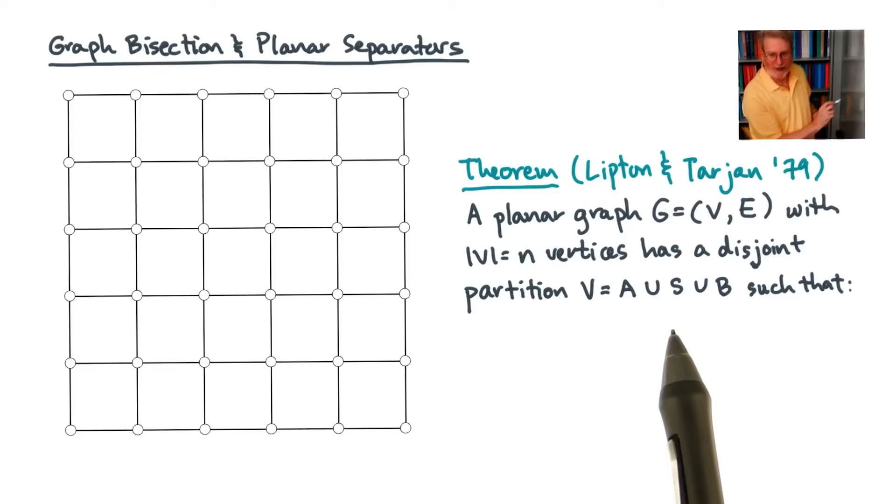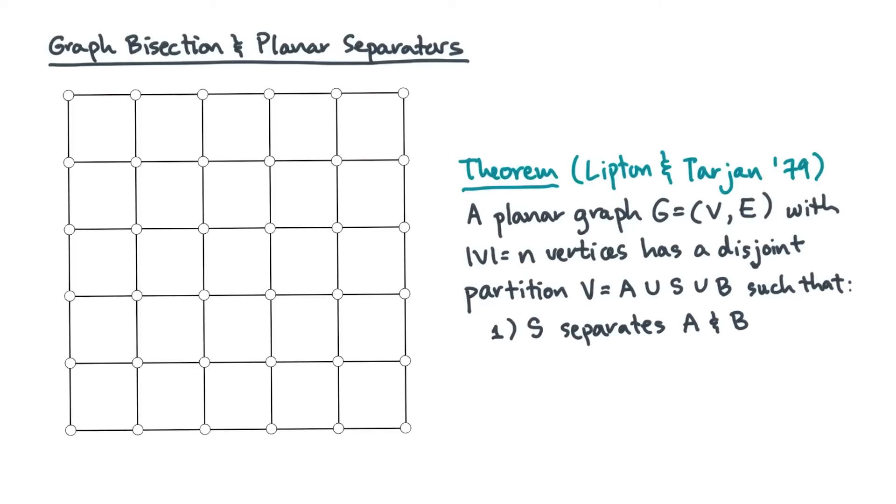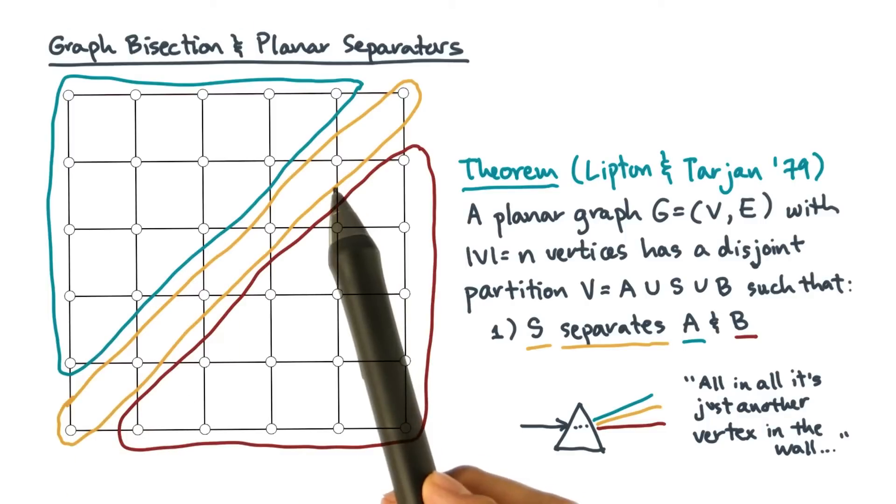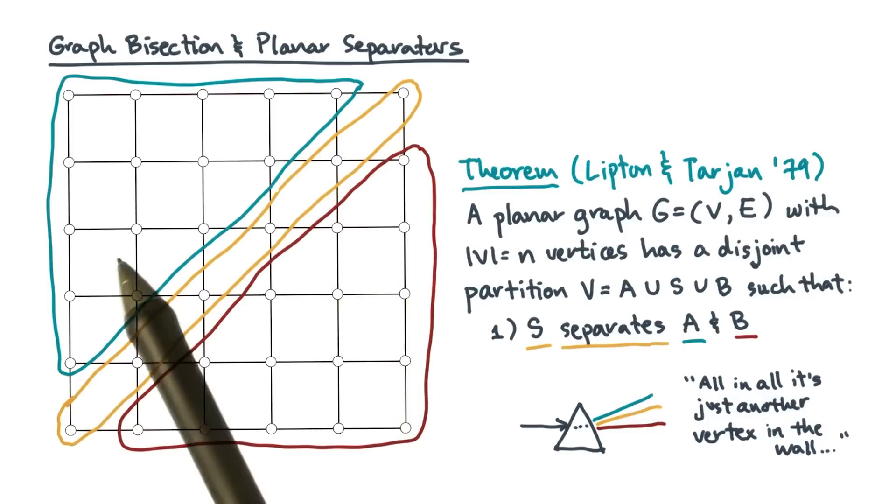such that the following supercool properties hold. The first one is that S is a separator for V. That is, there are no edges that directly connect A and B. Put differently, the subset of vertices S acts as a kind of wall between A and B. In other words, if you take the separator out of a connected graph, you get two or more connected subgraphs. That's the first property.